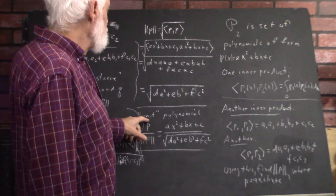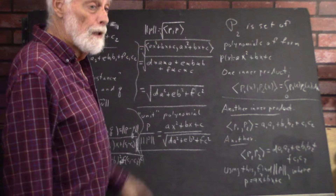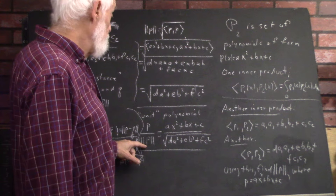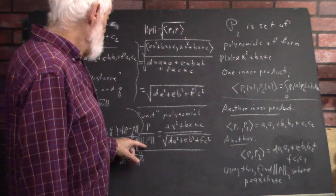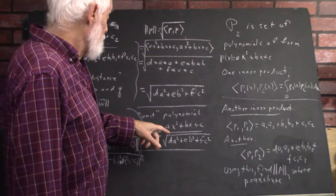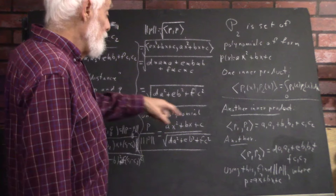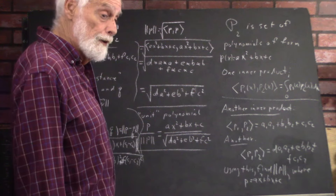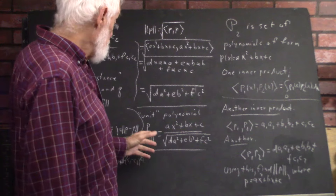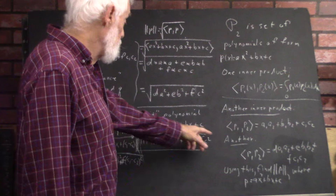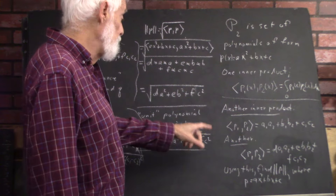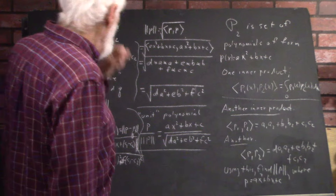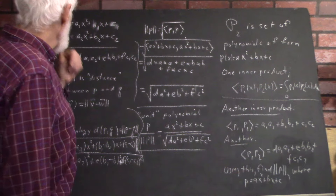We could define a so-called unit polynomial: P divided by the magnitude of P. That would be ax squared plus bx plus c, divided by the square root of d·a² plus e·b² plus f·c².